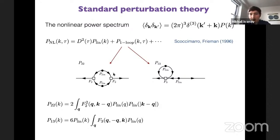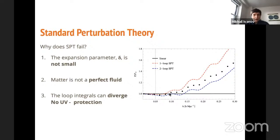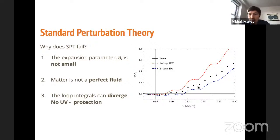The first loop contributions are called the one-loop contributions — P22 and P13 — corresponding to different Feynman diagrams. In principle this procedure can be iterated: you can compute the matter power spectrum at two loops, three loops, and so on. But it was realized early on that SPT fails to describe non-linear matter clustering. Here you can see the matter power spectrum divided by the prediction of linear theory: if you add one loop it overshoots; at two loops it undershoots. There is no scale at which the loops improve the description.